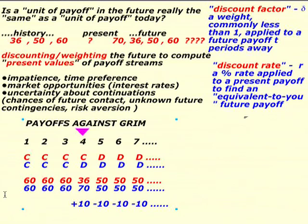Let's look at the Grimm strategy payoffs. Red and blue are cooperating along. In period four, the blue player decides to defect. In the short run, they get plus 10 — that's the short-run gain. But as soon as they defect, the red player looks back and says: I saw you defect last time; you cheated. So the red player defects as well and continues to defect. Once they've committed to defecting, you might as well defect too — otherwise you're just a sucker. So you get payoffs of 50 and 50 each period going forward.